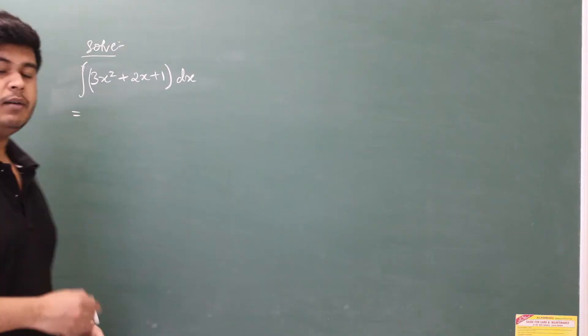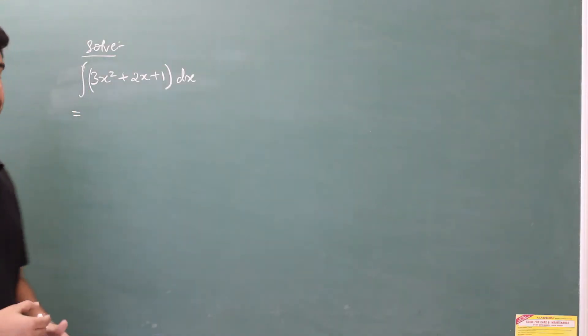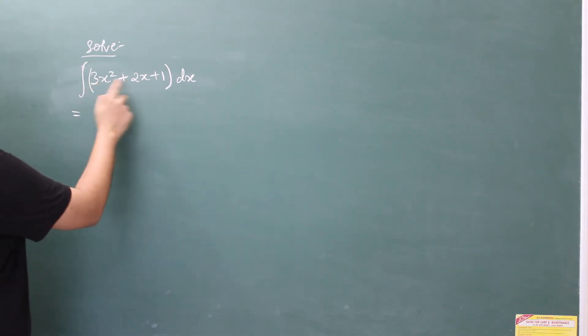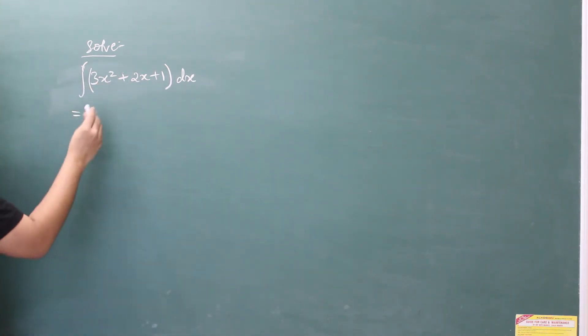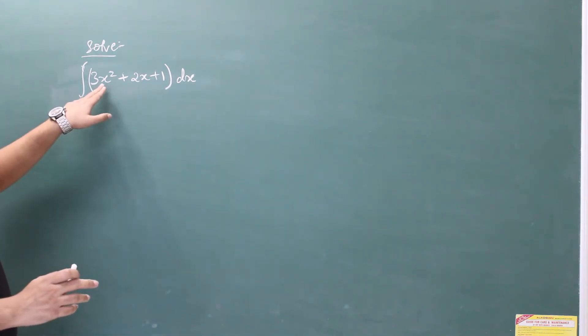This will be our first example on indefinite integration. The question given is: integration of 3x squared plus 2x plus 1 with respect to dx, that is with respect to the x variable. Now how do we start? First of all, let's see how many terms are here. There are three terms.